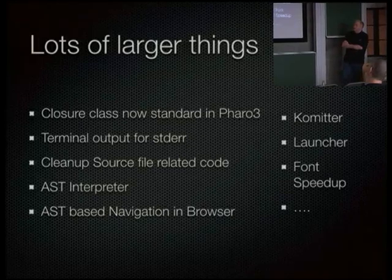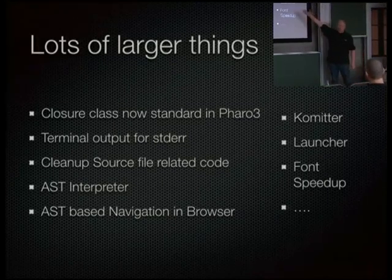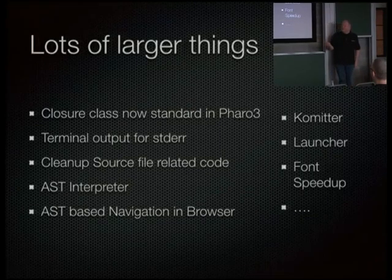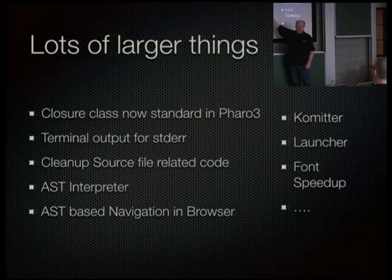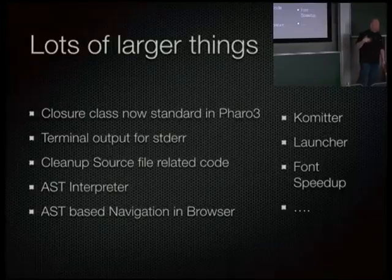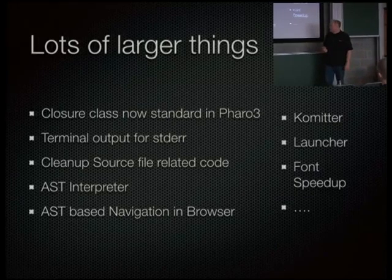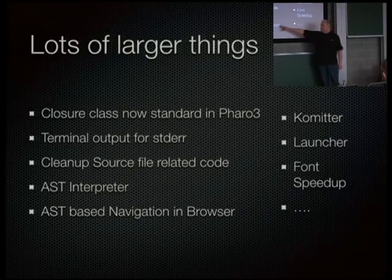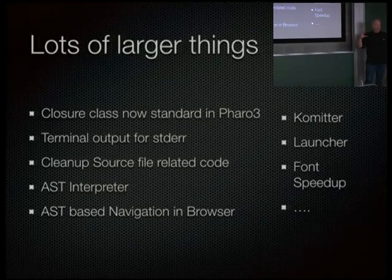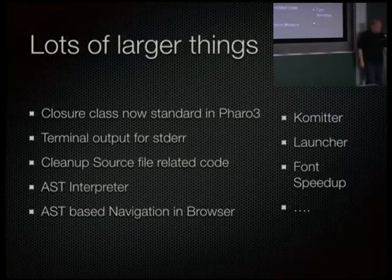Of course, there were a lot of larger improvements too. For example, we added the continuation class that used to be in Seaside into the system, so now you have a continuation implementation you can use directly without loading Seaside. We now have real terminal output for standard error on Unix. We cleaned up a lot of source files. We have an AST interpreter in the system that allows experimentation with Smalltalk-like systems — it's a visitor over the abstract syntax tree, simple but complete, able to run the whole test suite. We added AST-based navigation in the browser so you can navigate by AST node or statement instead of character by character. We added a nice commit tool and lots of small speedups.